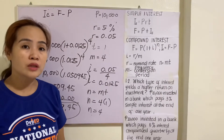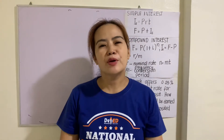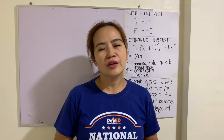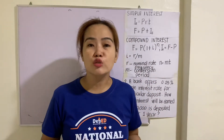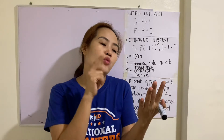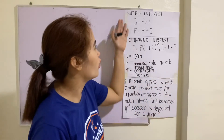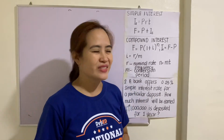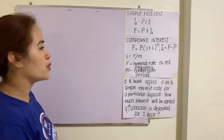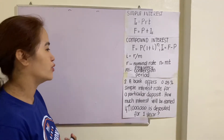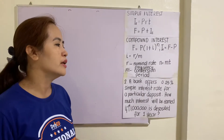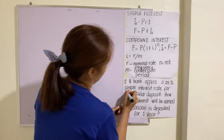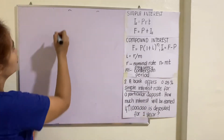So the five percent compounded quarterly investment yields five hundred nine point forty-five, which is higher than the three hundred from simple interest. How do we distinguish simple from compound interest? It's very easy — once you read the problem, just look for the phrase 'simple interest' or 'compound' and the frequency conversion period. From those words you can easily identify which formula to use.